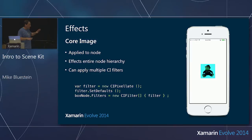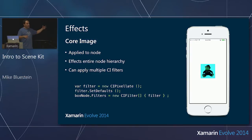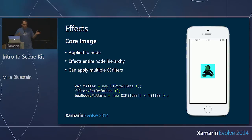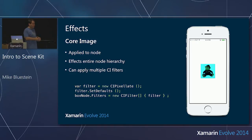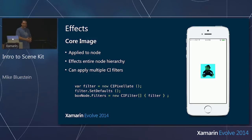Say I wanted to use an imaging library like Core Image to apply some kind of imaging effect within my game or 3D application. I can use Core Image exactly as you know it right now, out of the box. All I have to do is apply the filters to the SCN node.